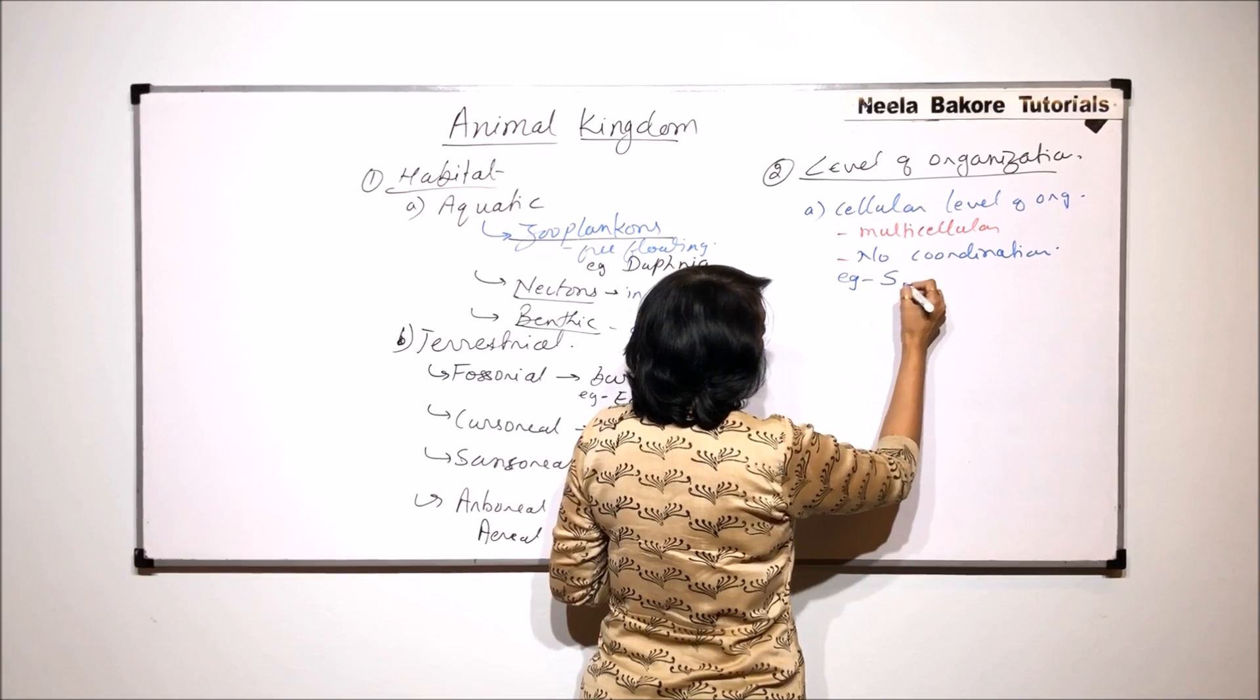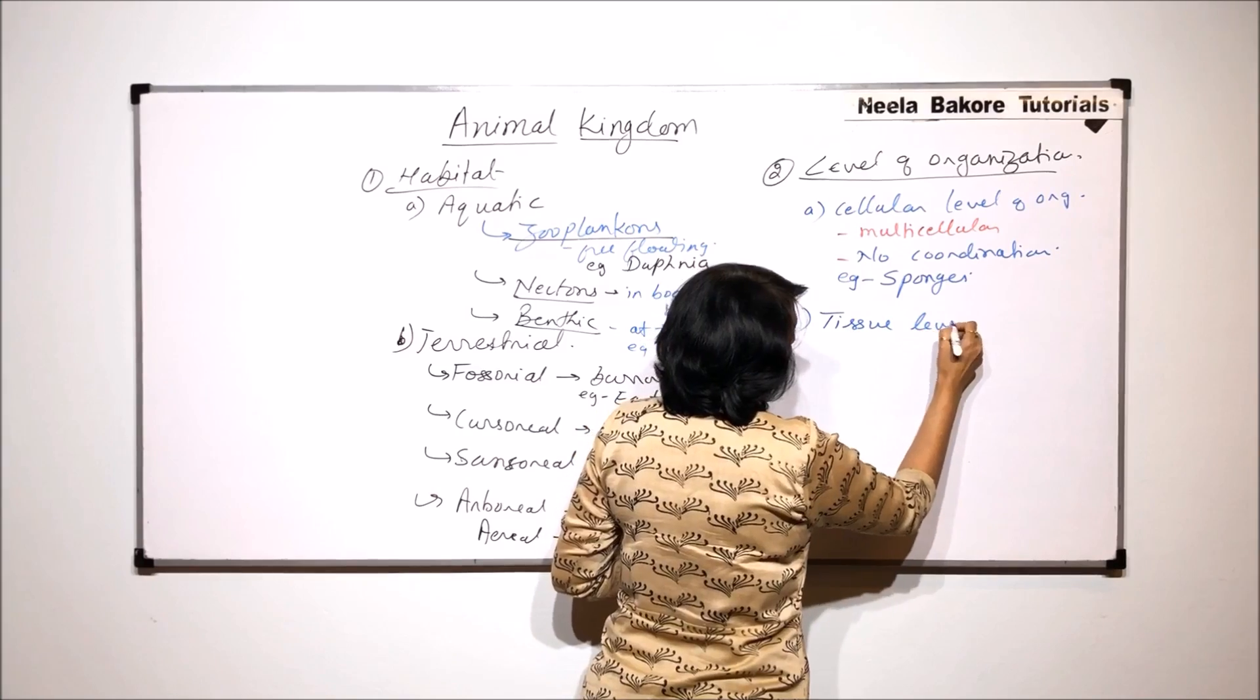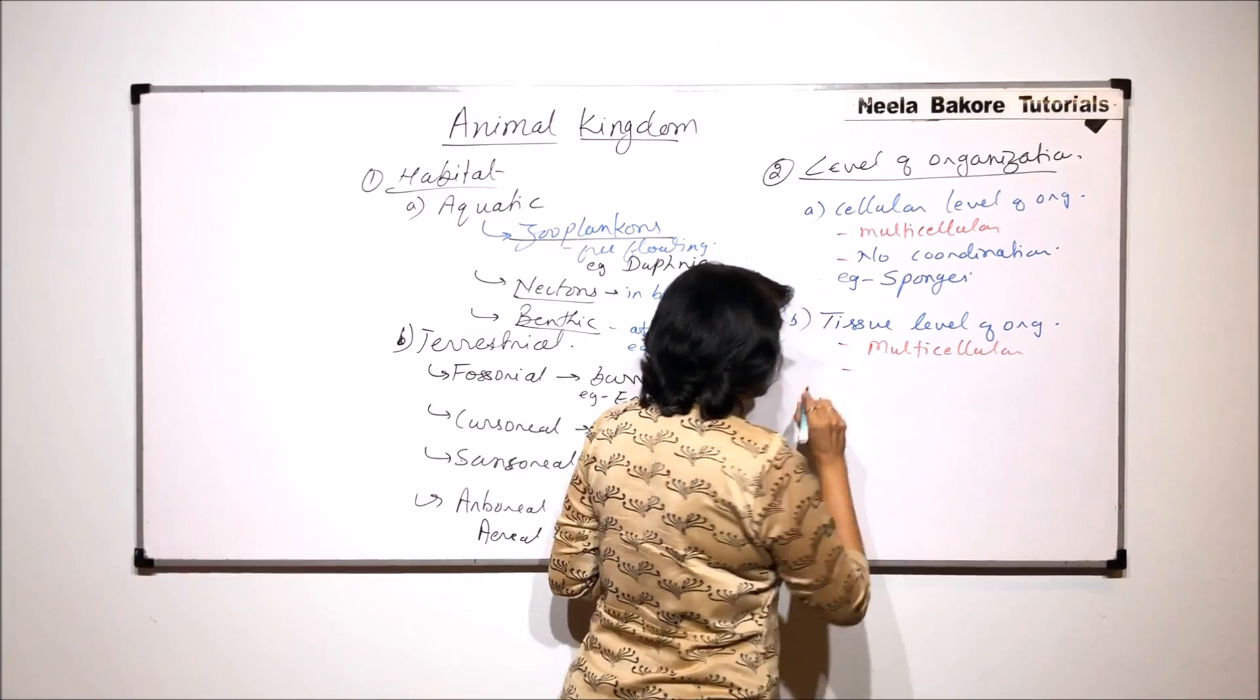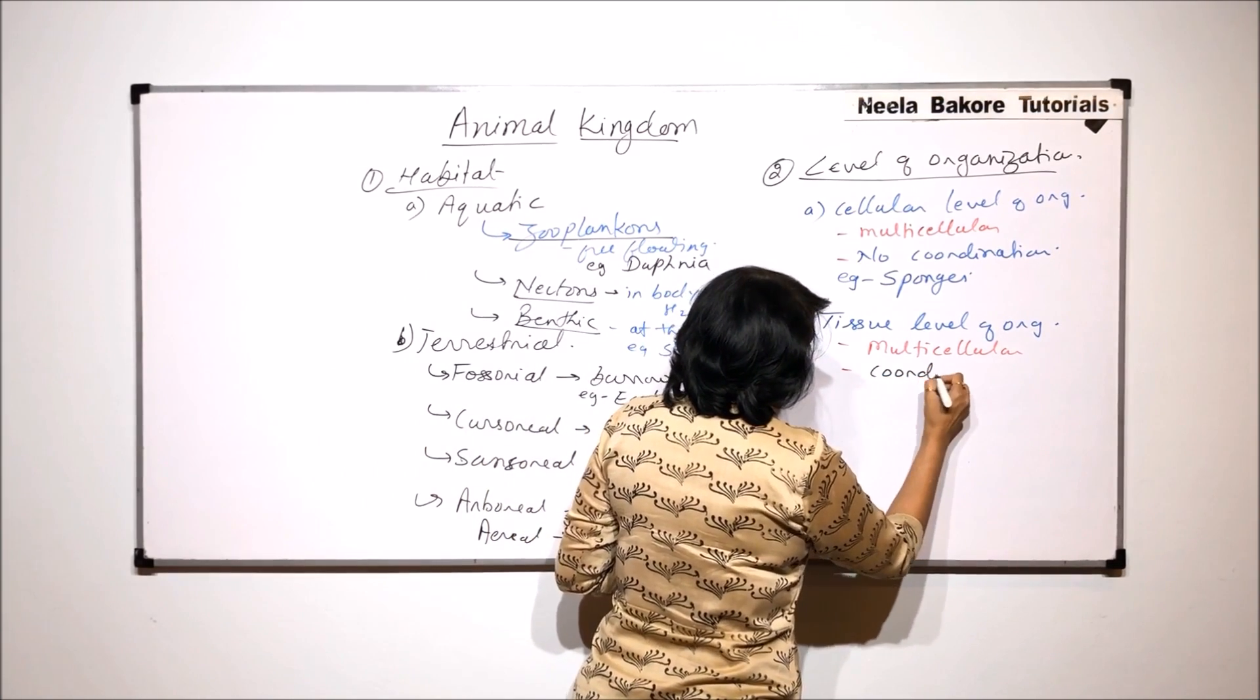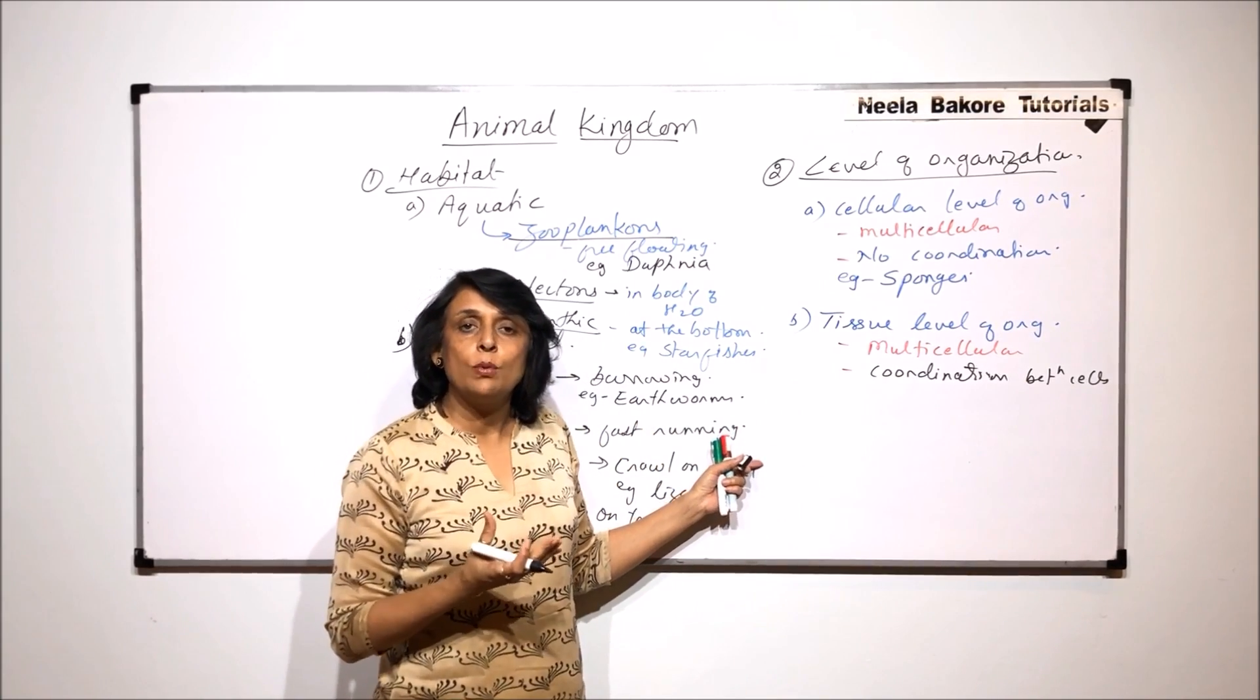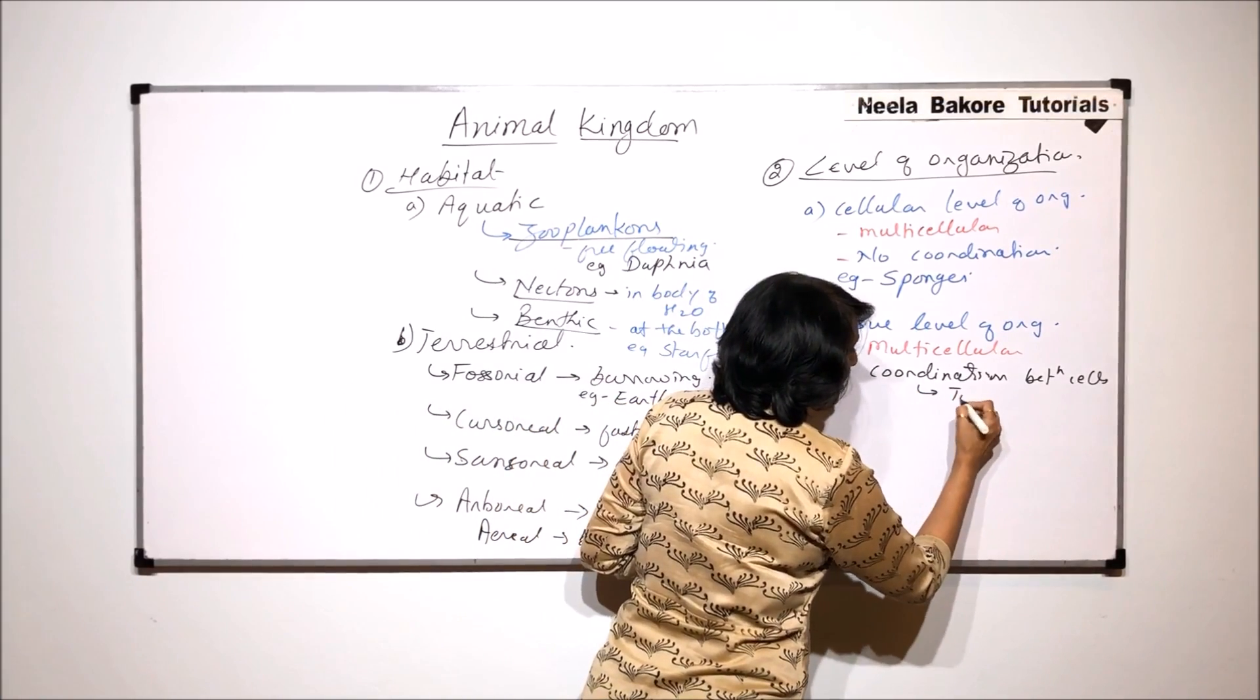And here the example that we can take is of sponges. The second level is known as the tissue level of organization. In tissue level of organization also the animals are multicellular. But here is one change that we see coordination amongst these cells. That means if the cells are working together they are coordinating with each other. That forms a tissue. Tissue is nothing but a collection of cells which is performing a specific function. So this coordination gives us the tissue.